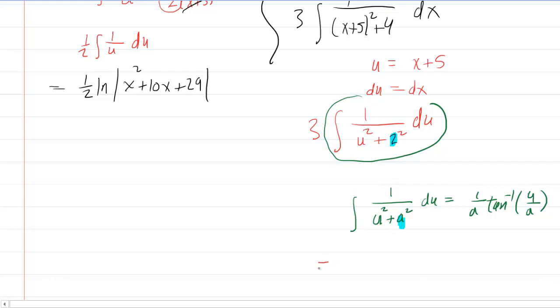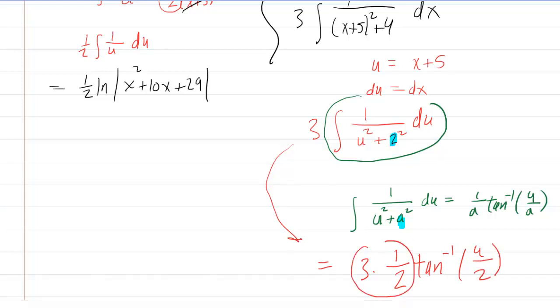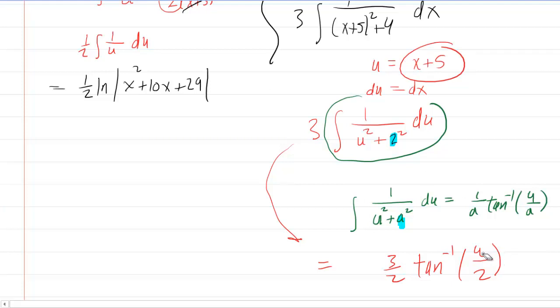So when we evaluate our integral using that rule, we'll have 3 times 1 over the a value of 2, and then the arctangent of our u also over 2. Now we can multiply those two together to make 3 halves. So that'll clean that up. And then we recall that u was x plus 5. So we just go back and change this u up here to our x plus 5. That would complete that integral.